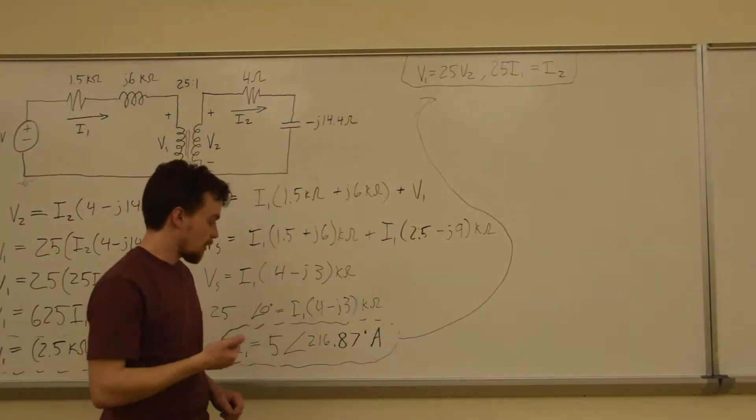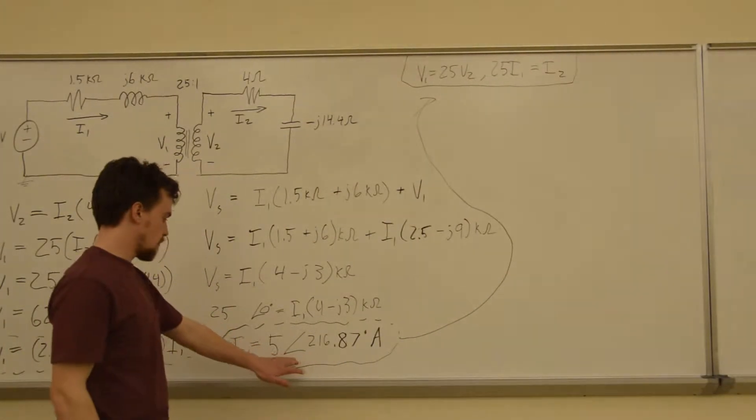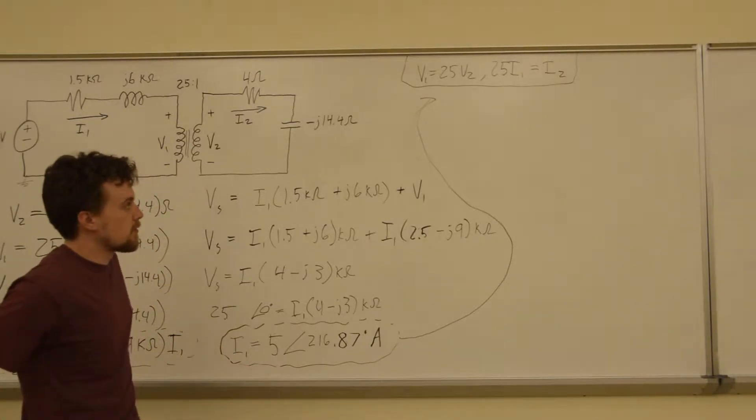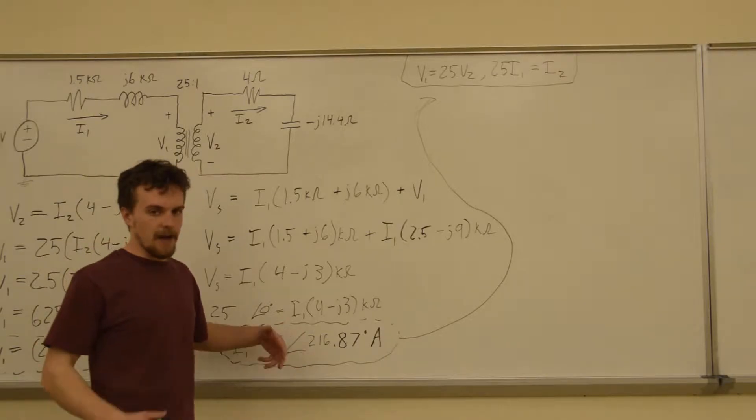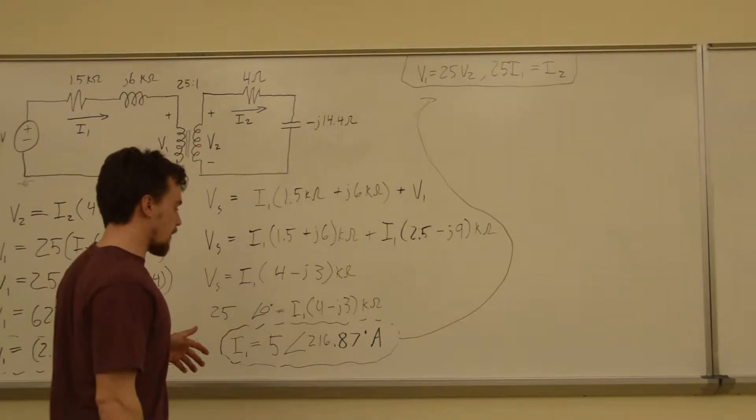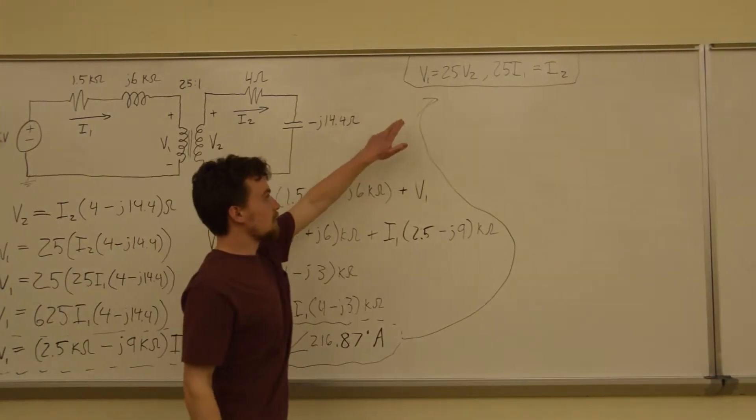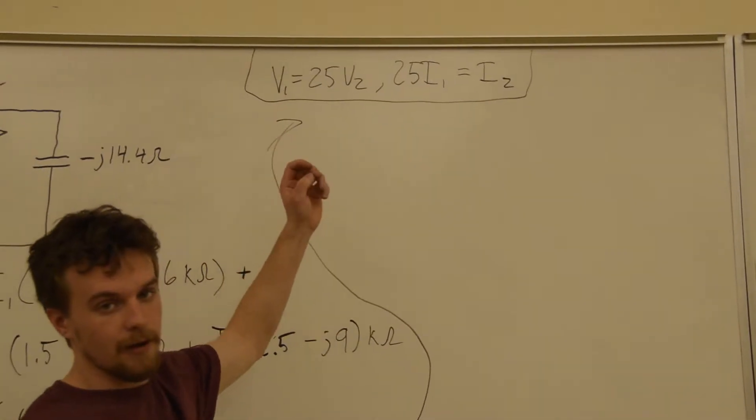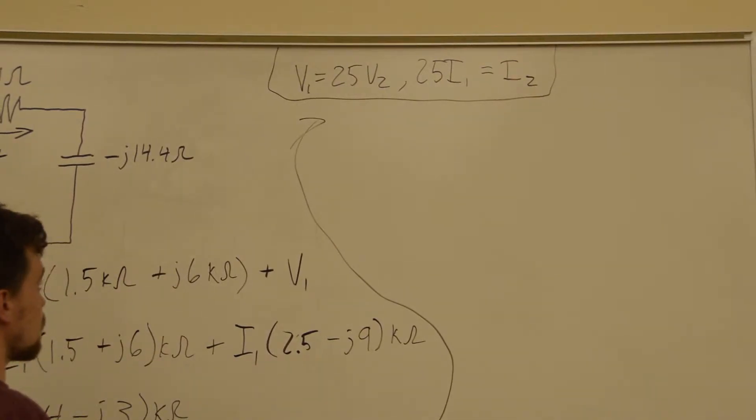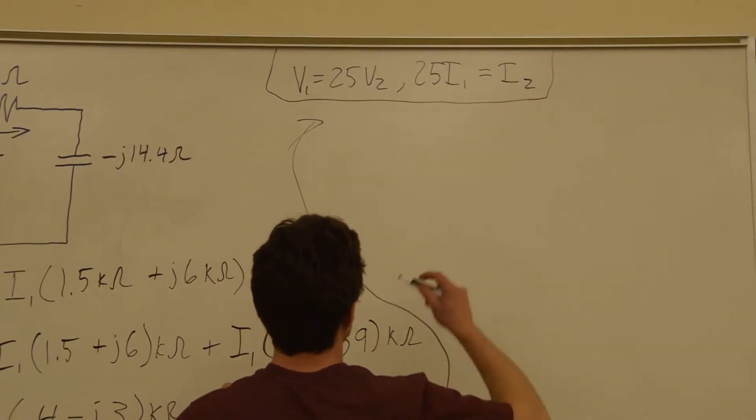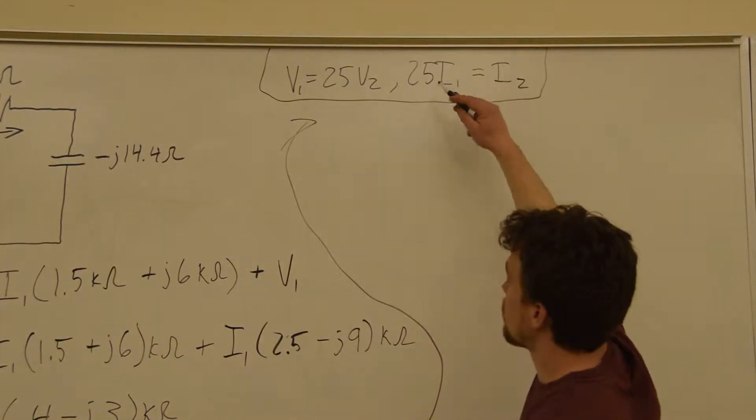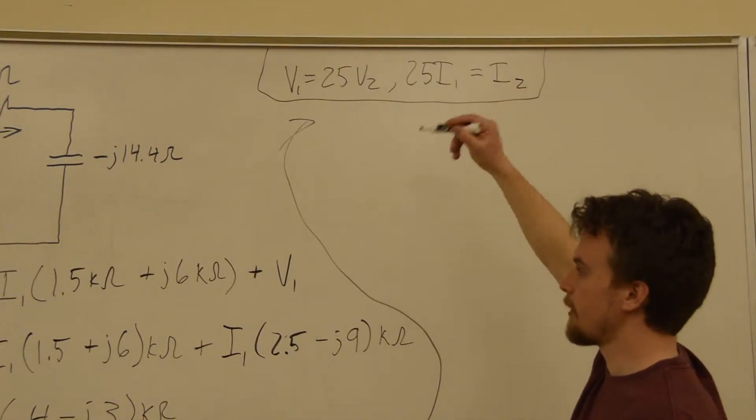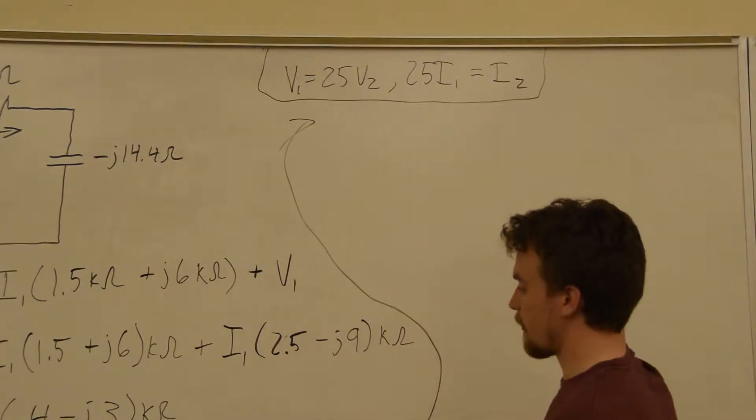Okay, so now we have a definite value, a number value for I1. So, the rest of the values in the circuit will kind of just flow from that. Because we have these two equations from the behavior of an ideal transformer. So, we have a definite value for this number. And somewhere we have a relationship between one of the voltages and one of the currents. And we'll just get the rest of the values from this.